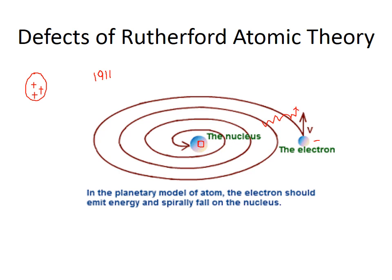As they are losing their energy, the stage comes when they will fall down into the nucleus. If the electron falls into the nucleus, the atom will be no more stable, and we all know that the atom is a stable particle.